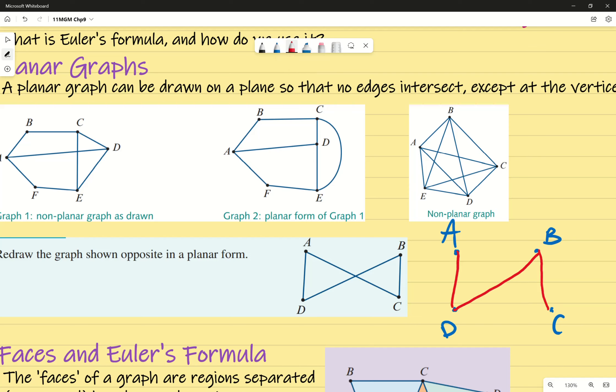B to C, and I'll notice that if I draw that C to A line, it's going to intersect, isn't it?